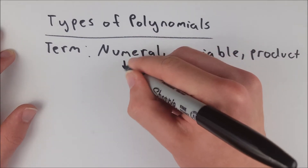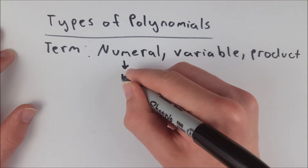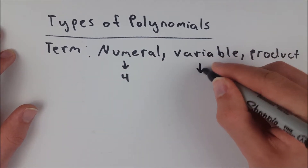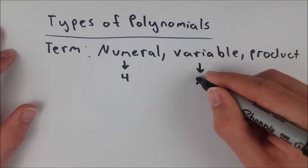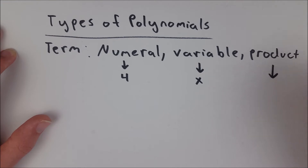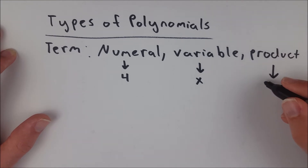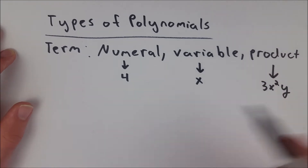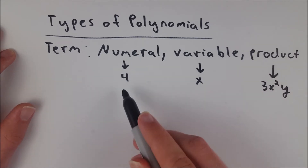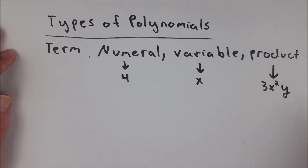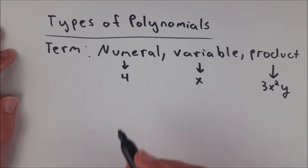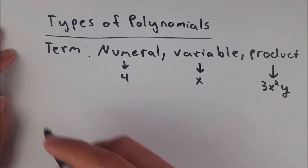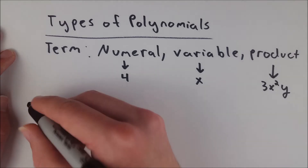An example of a numeral would be something like 4, an example of a variable would be something like x, and a product of the two could be anything, let's say 3x²y. That could be a product of numerals and variables, and each one of these individually is one term. Now let's get into the names of the types of polynomials.